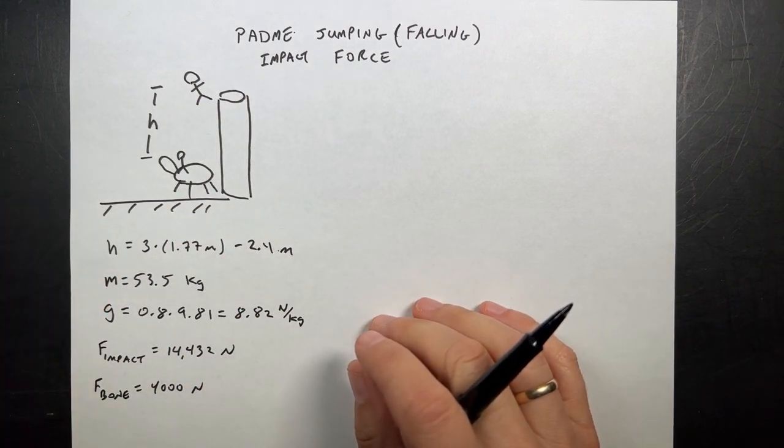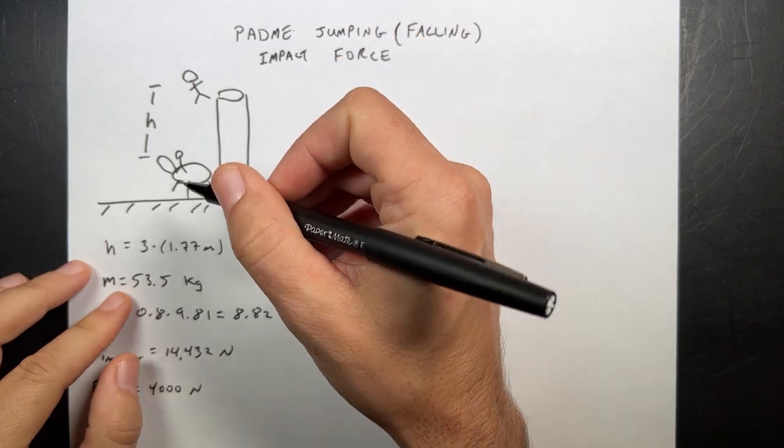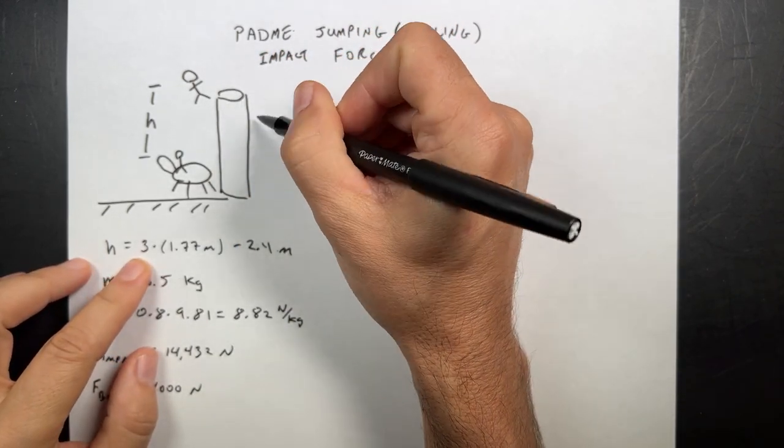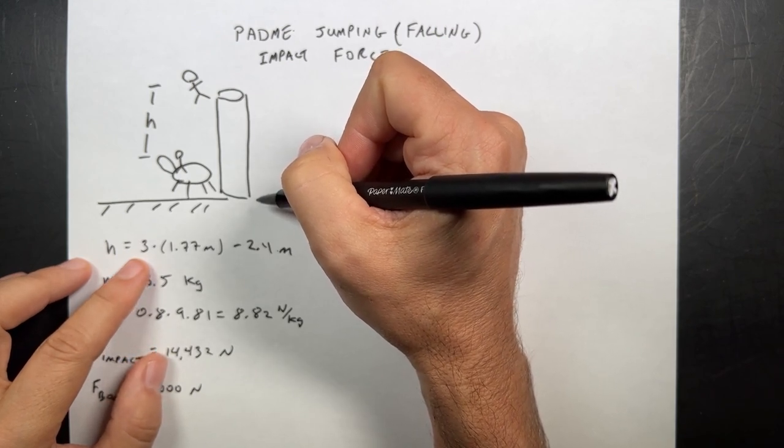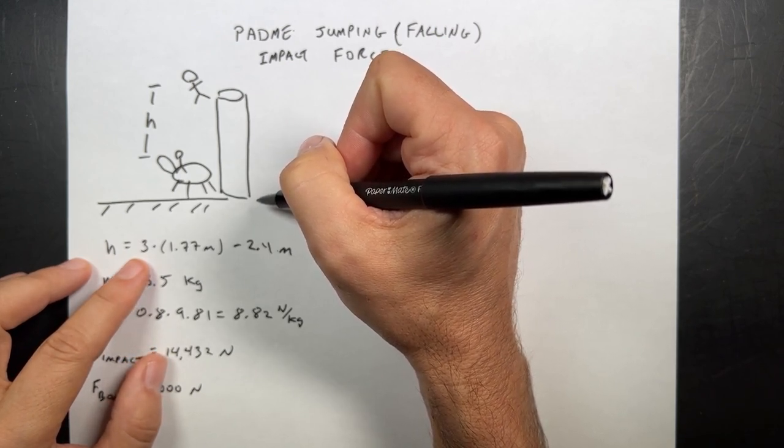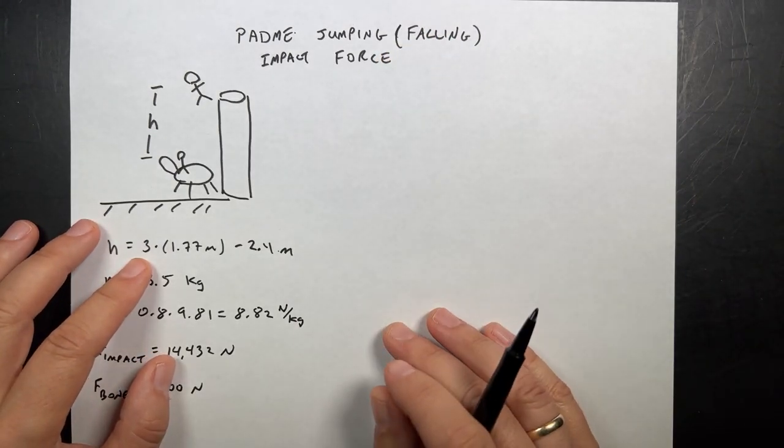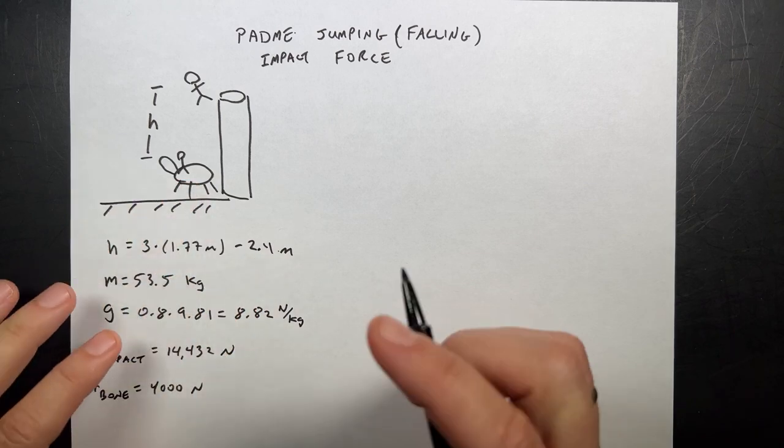From the video on Twitter, these are the numbers that she had. She said that the height of the pole, which I'm calling H, was three times the height of Obi-Wan. I think you could probably get a pretty good estimate. You could use video analysis, but I'm just going to go with her value.